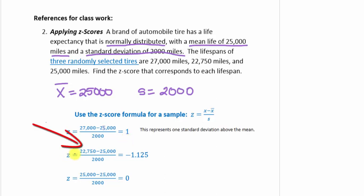Our second example: the x-value is 22,750 miles minus the mean divided by 2,000, and that equals negative 1.125. Notice we have a negative z-score. That means we are 1.125 standard deviations below the mean, or to the left of the mean.